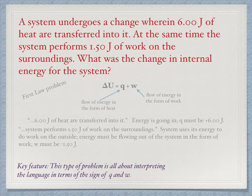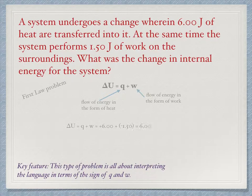With that, we solve the problem using the first law equation. Delta U equals Q plus W, which equals plus 6.00 joules plus minus 1.50 joules. 6.00 joules minus 1.50 joules equals 4.50 joules. This is the answer to the problem.